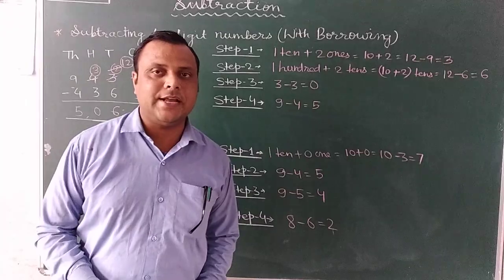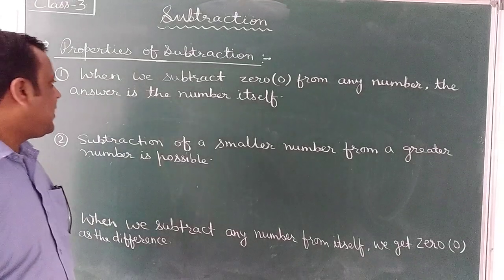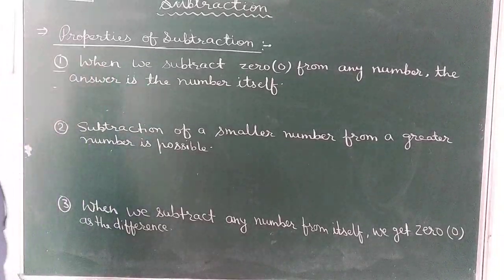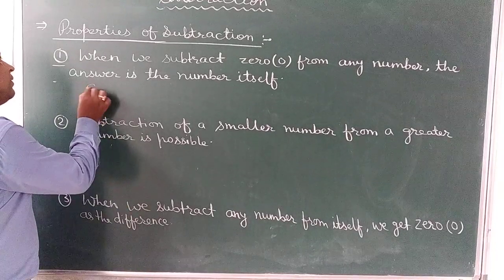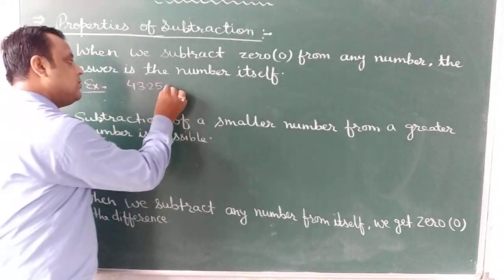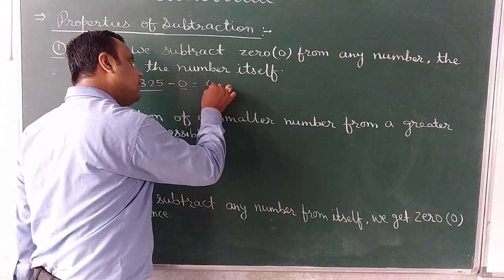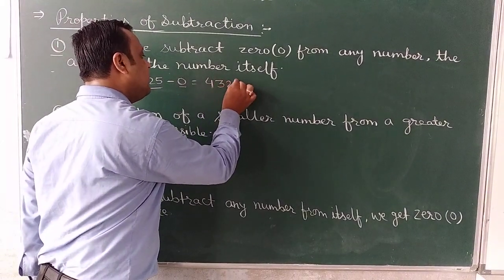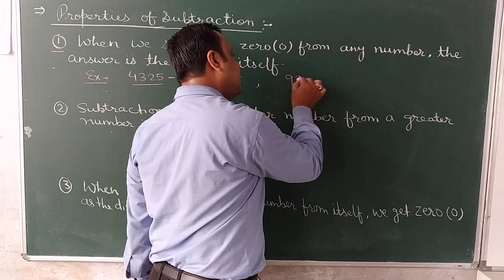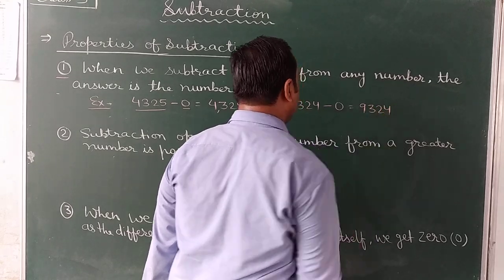Now we will learn the properties of subtraction. Property 1: when we subtract 0 from any number, the answer is the number itself. For example, 4,325 minus 0 equals 4,325. Another example: 9,324 minus 0 equals 9,324.